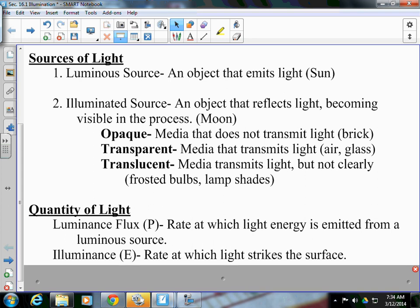So, a couple vocab things. Since we are introducing light, we are very heavy with the concept of light. The quantity of light. We have luminous flux, which is measured in P, the rate at which energy is emitted from a luminous source. And we have illuminance, E, the rate at which light strikes a surface.